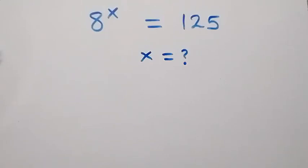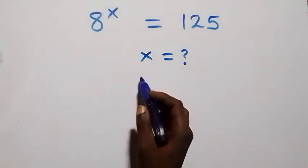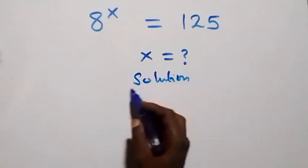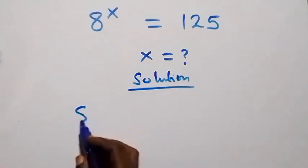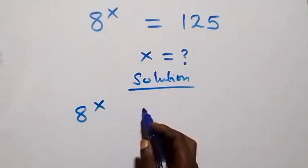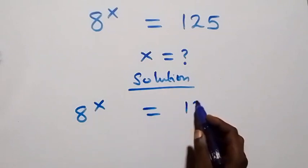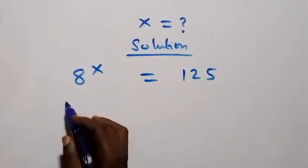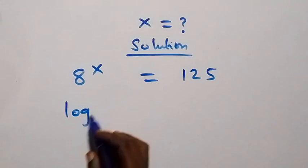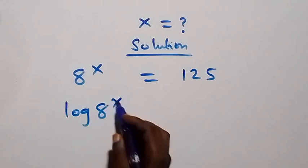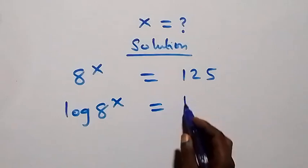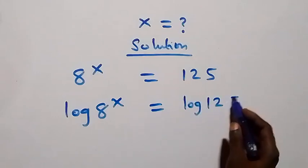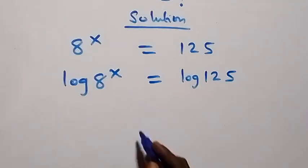Hello, you're welcome. Here we solve a nice exponential equation. We are given 8 raised to the power x equals 125. From here, let's take the log on both sides: log of 8 raised to power x equals log of 125.